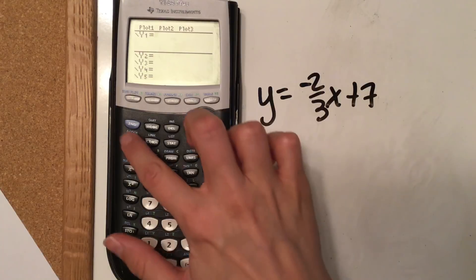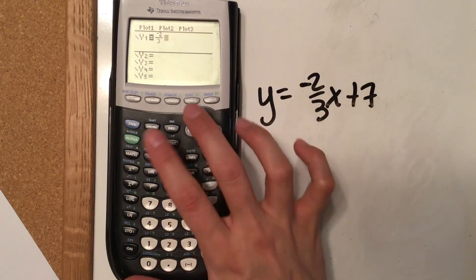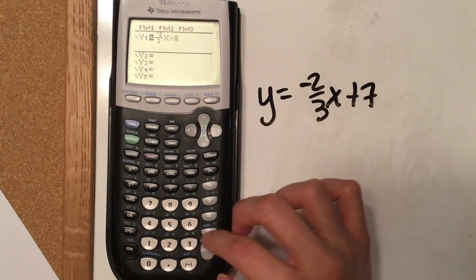If you don't like your fractions like this, remember you can do alpha y equals, and then it looks like the fractions that you write on paper, which is nice. And then plus seven.